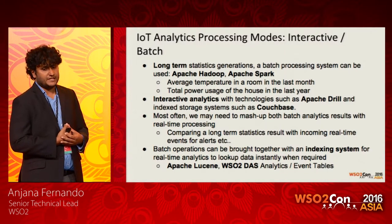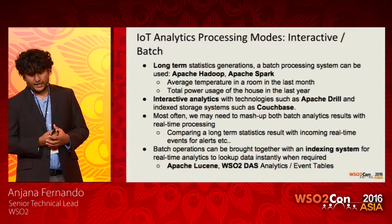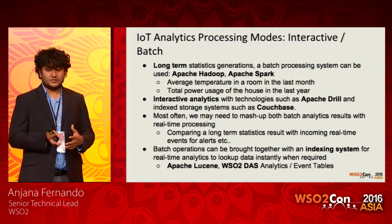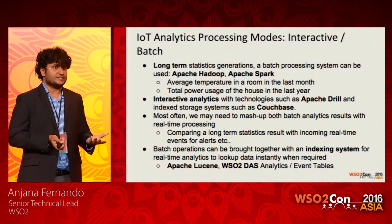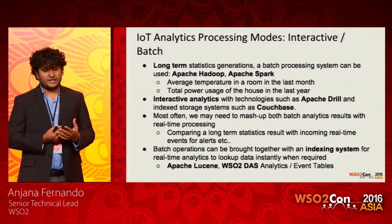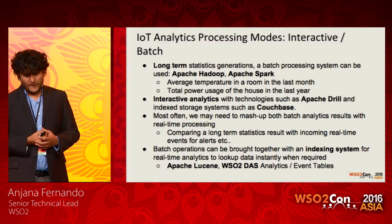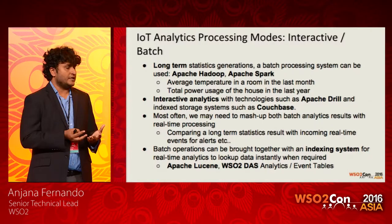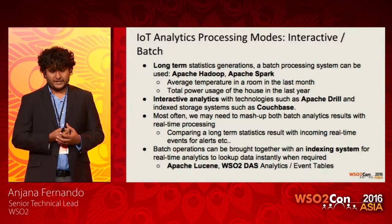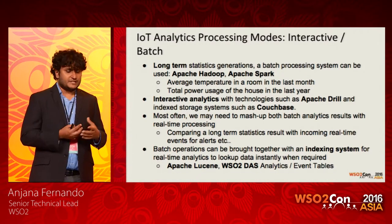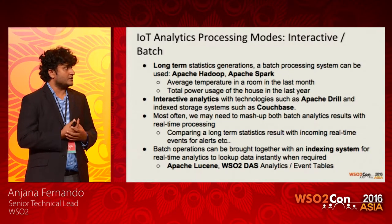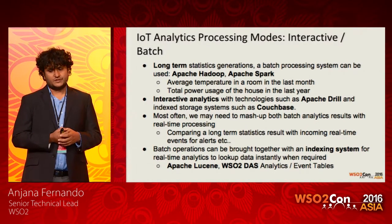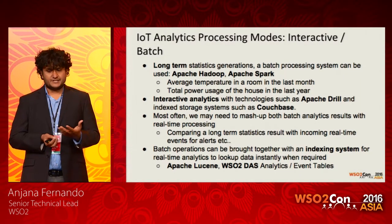The other mode is interactive and batch processing. For long-term statistics generation — for example, the average temperature in a room over the last month — you can use a batch processing system like Apache Hadoop or Spark. These can process large amounts of stored IoT events and get results back, shown in a dashboard. Interactive analytics can also be used with technologies like Apache Drill and special database systems like Couchbase. Apache Drill lets you explore self-describing data without a specific schema, drilling down and exploring data on the fly.